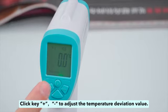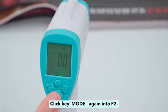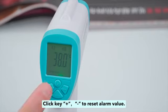Click plus or minus to adjust the temperature deviation value. Click key mode again to enter F2.